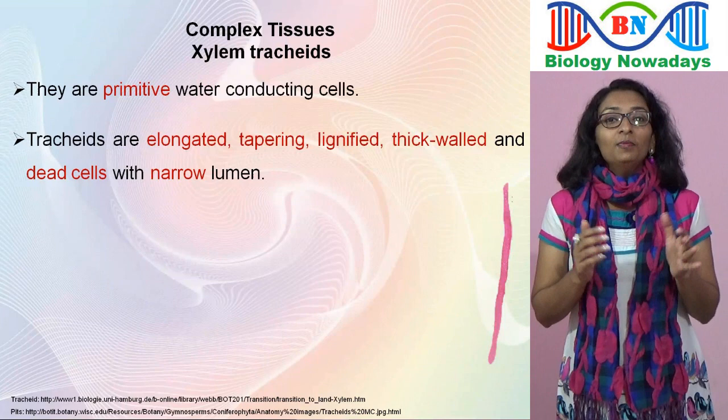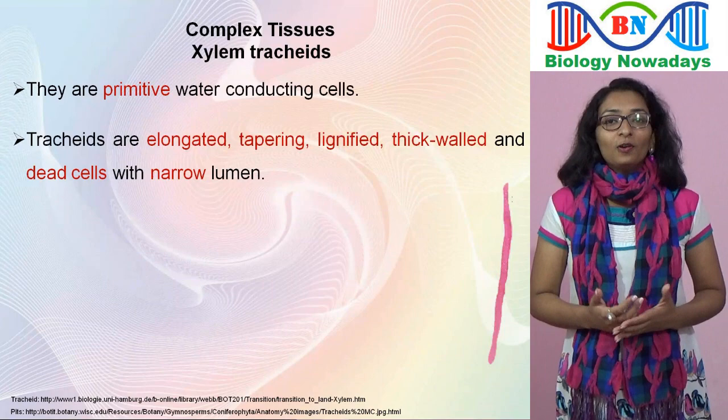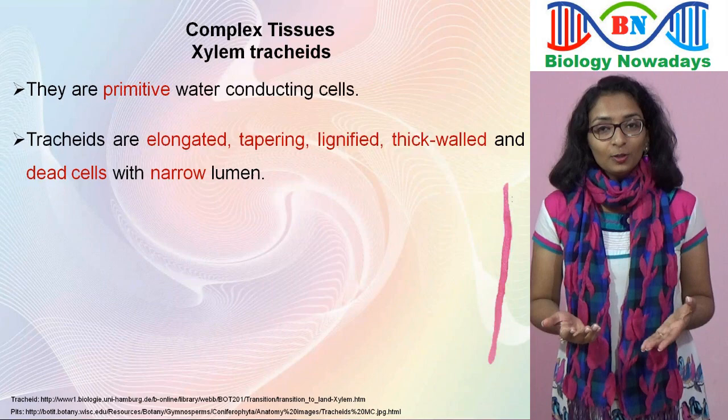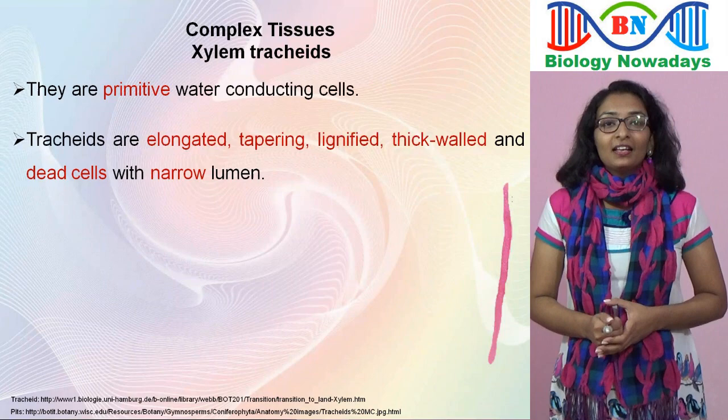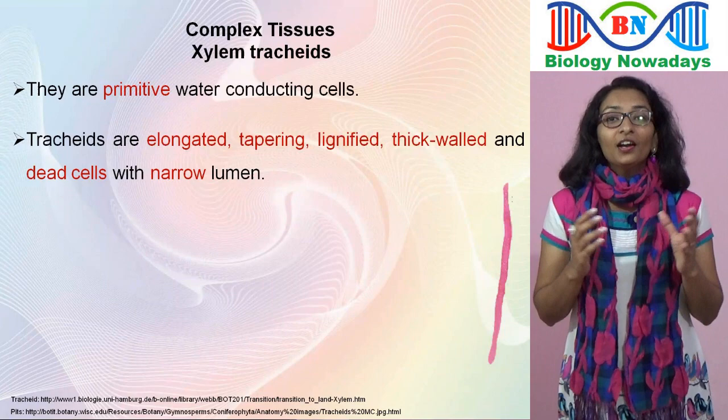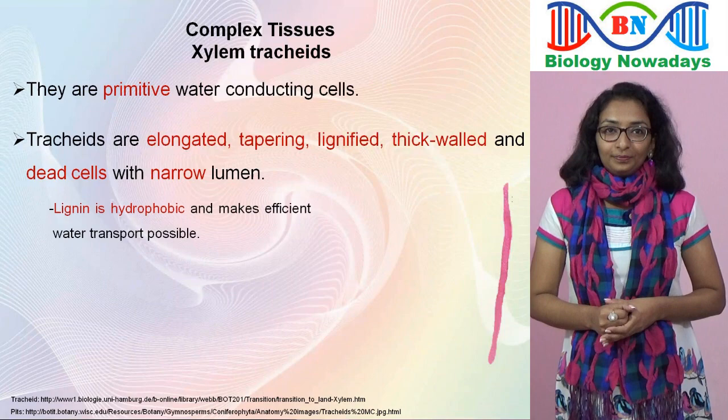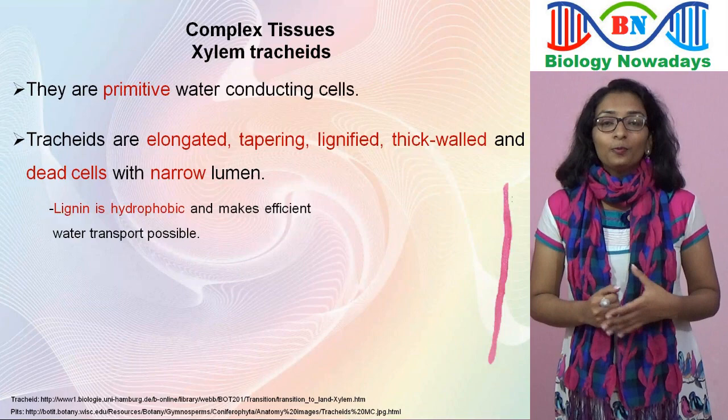Plant cell walls are made up of polysaccharide components, mainly cellulose, also hemicelluloses and pectins. They are highly hydrophilic, which means they have a high affinity to water, whereas lignin is more hydrophobic — in other words, lignin cannot be easily wet. Thus, lignin makes it possible for xylem conducting cells to conduct water efficiently.